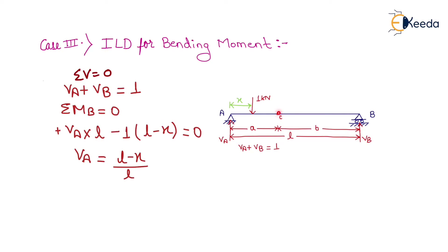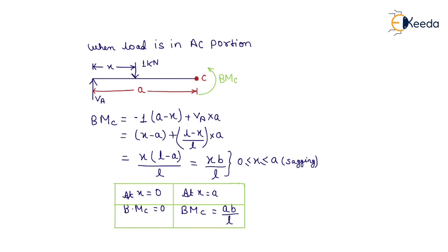For finding the bending moment at section C, we consider two conditions. When the unit load is in the AC portion, the bending moment at C equals minus 1 into (A minus x) plus Va into A. After substituting Va equals (L minus x)/L, we get bending moment at C equals x into (L minus A) upon L, which equals x·B upon L. This equation is valid for x between 0 and A.